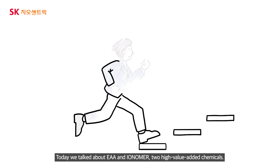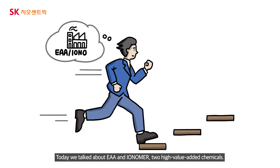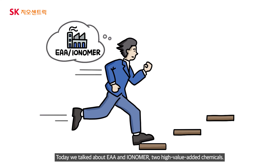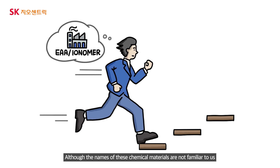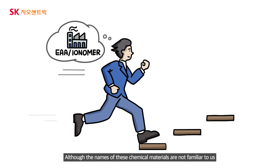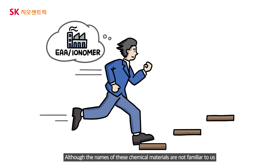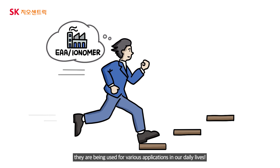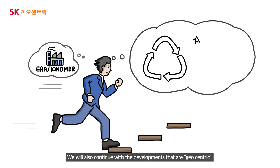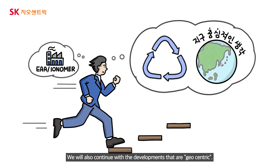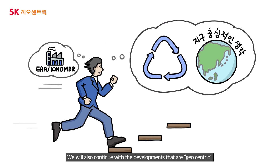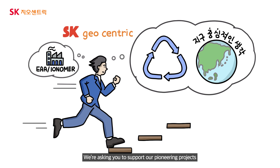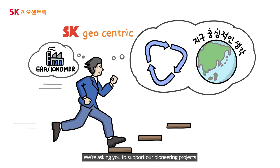Today we talked about EAA and ionomer, two high-value-added chemicals. Although the names of these chemical materials are not familiar to us, they are being used for various applications in our daily lives. We will continue with developments that are eco-friendly, and we're asking you to support our pioneering projects as SK Geocentric won't stop trying to make eco-friendly developments.